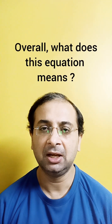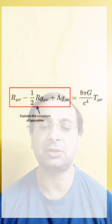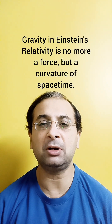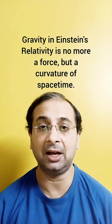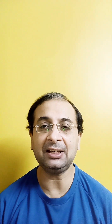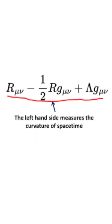First, let us understand overall what this equation means. On the left-hand side, if you look into this equation, this is what is called the curvature of space-time. As I mentioned, gravity as perceived by Newtonian mechanics is no more a force, but rather a structure or a curvature of space-time. So the entire left-hand side of this equation beautifully explains how the curvature can be measured — there is different mathematics which we will go into later.